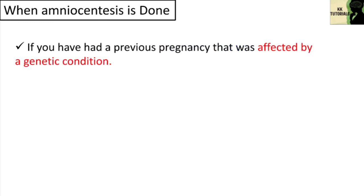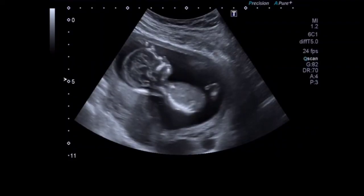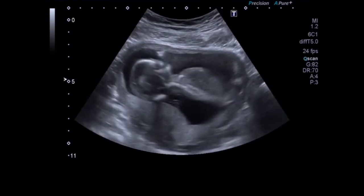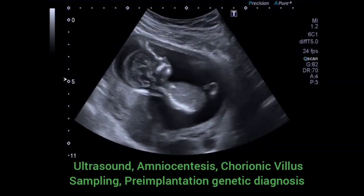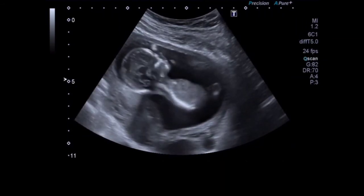Amniocentesis is recommended if you have had a previous pregnancy affected by a genetic condition, or if you have a family history of a genetic condition such as sickle cell disease, thalassemia, cystic fibrosis, or muscular dystrophy. Sex selective abortion has been a leading cause for a higher ratio of male to female births, and techniques such as ultrasound, amniocentesis, chorionic villus sampling, and pre-implantation genetic diagnosis can provide information about the sex of the fetus.